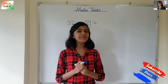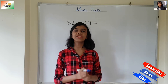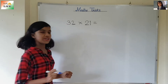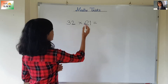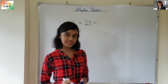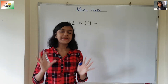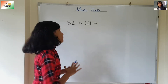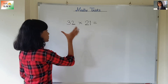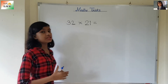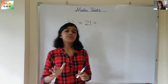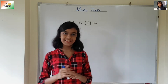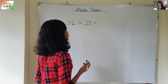Hello everyone, I am Matrija. Welcome to my study room. So can you all see this question over here? 32 into 21, 32 multiplied by 21. I am going to tell you a trick by which you can do this multiplication just within 3 seconds. Yes, within 3 seconds. So, let's begin.